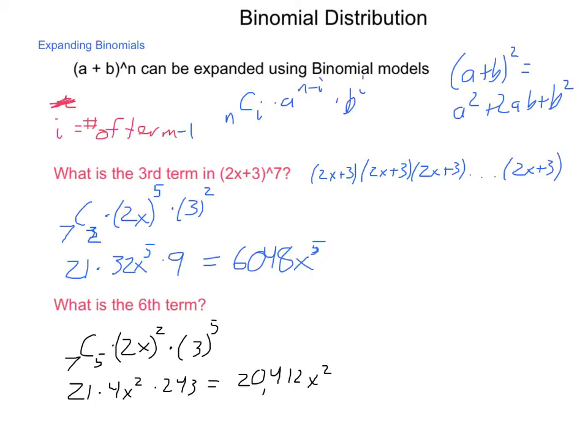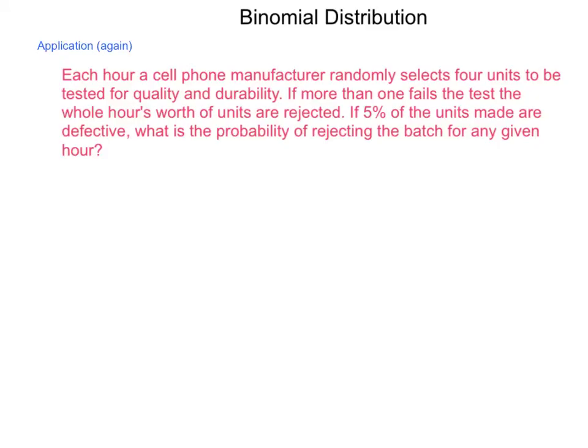Binomial distribution will help with this. If you've ever worked with Pascal's triangle, that can be built also using the binomial expansions. Let's take a look at another way that this idea of binomial distribution and binomial expansions can be applied, and that's in quality control. Each hour, a cell phone manufacturer randomly selects 4 units to be tested for quality and durability. If more than one fails the test, that whole hour's worth of units are rejected. On average, they found that 5% of the units made are defective.